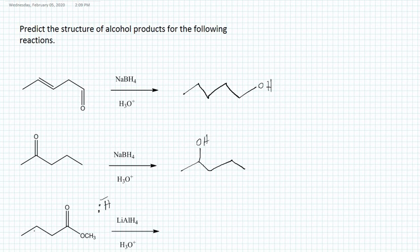So we will have one, two, three, four carbons. Then we will have an alcohol functional group, a primary alcohol. Thank you so much for watching the video.